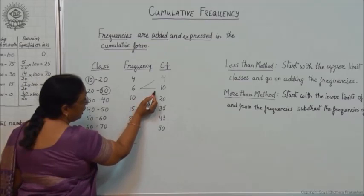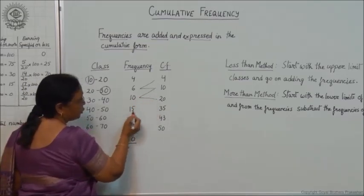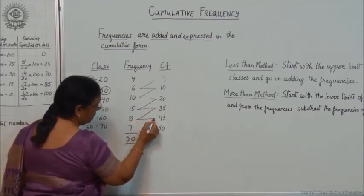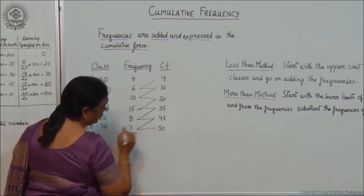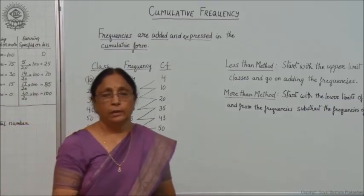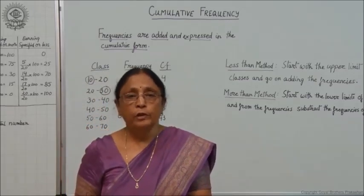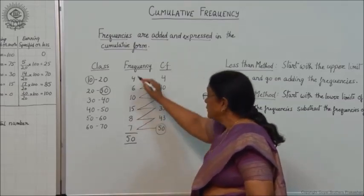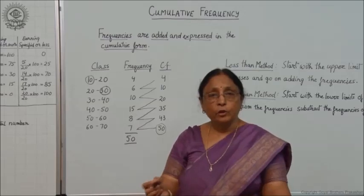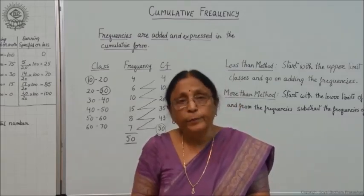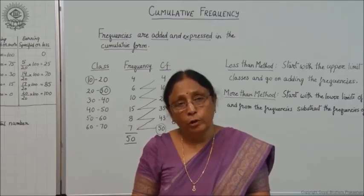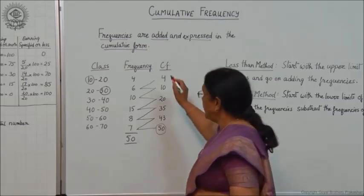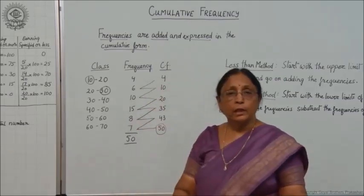You keep on adding like this: 10 plus 10 is 20, 20 plus 15 is 35, 35 plus 8 is 43, and this way we get 50. This is known as the cumulative form of frequency. Whatever last figure you get — here it is 50 — this will be the total of the frequencies. This is a cross-check: it means you have added up the frequencies in proper order and have not missed any calculation or any frequency. This is how cumulative frequencies are formed.